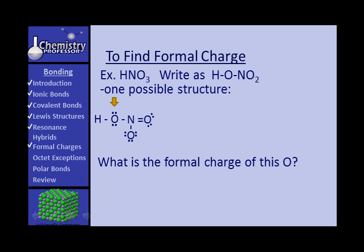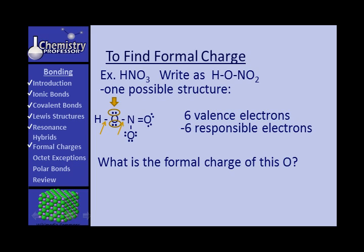Let's start with this oxygen and find the formal charge. It has six valence electrons. There's a lone pair — that's two — and another lone pair — that's four. It has one electron from this bond and one electron from this bond, so that's 2, 4, 5, 6. It has six electrons for which it is responsible, giving it a formal charge of zero. So the formal charge on that oxygen is zero.